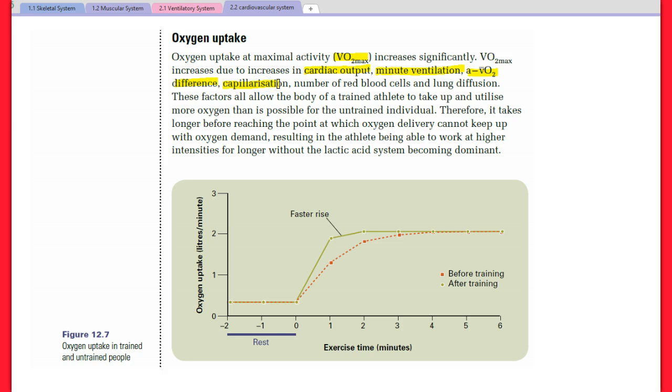Capillarization - if we have more capillaries forming around our lungs, more capillaries forming around our muscles, then there's greater surface area for gaseous exchange to occur. Increased number of red blood cells in our blood, so more oxygen can be picked up at the alveoli.